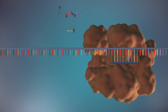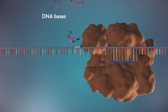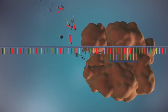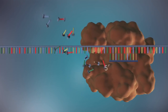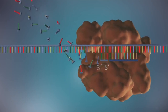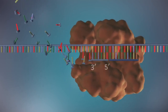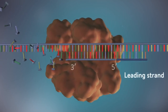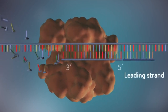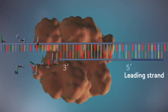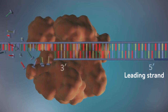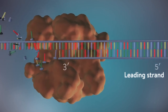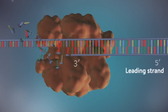DNA polymerase can only add DNA bases in one direction, from the five prime end to the three prime end. One of the new strands of DNA, the leading strand, is made continuously, with DNA polymerase adding bases one by one in the five prime to three prime direction.